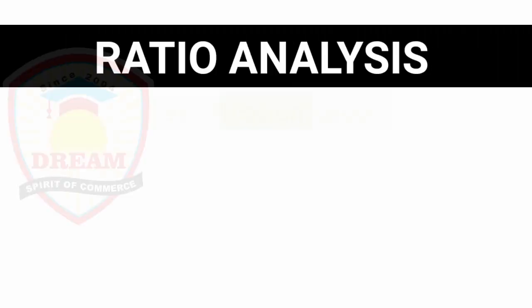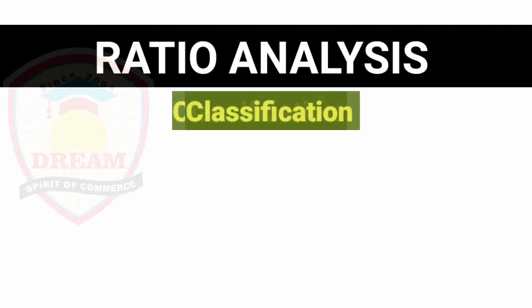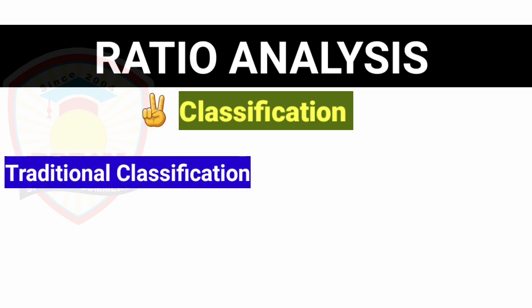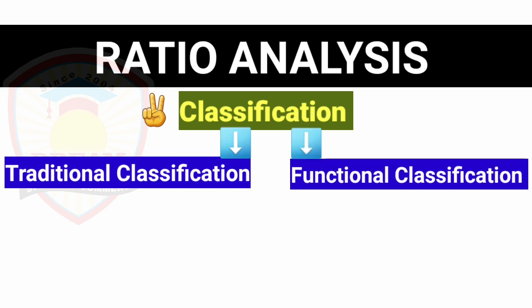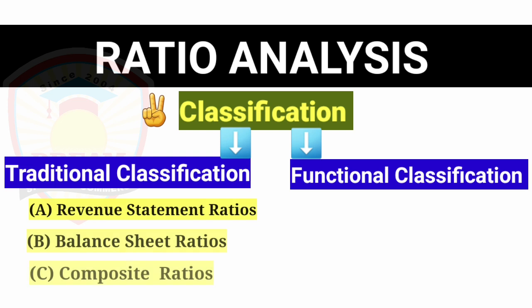Ratio analysis. Ratios are generally classified as follows. Type 1: traditional classification. Type 2: functional classification. In traditional classification, there are three categories of ratios: one, revenue statement ratios; second, balance sheet ratios; and third, composite ratios.